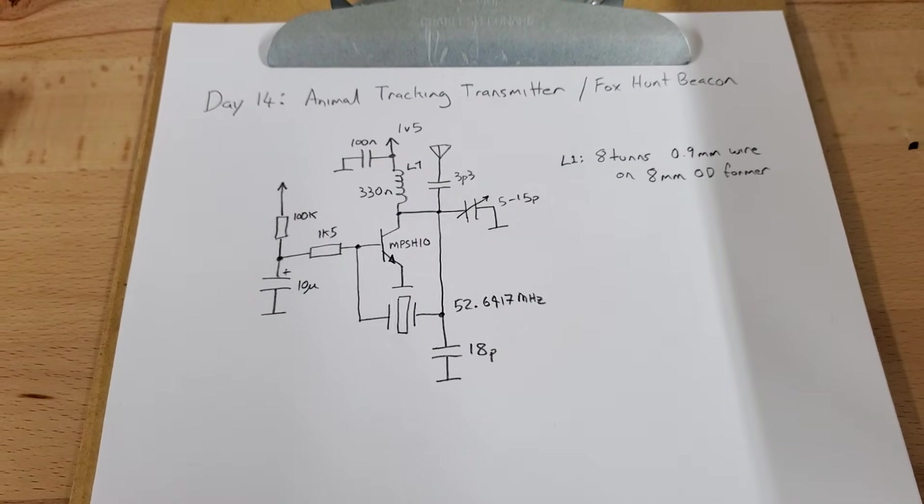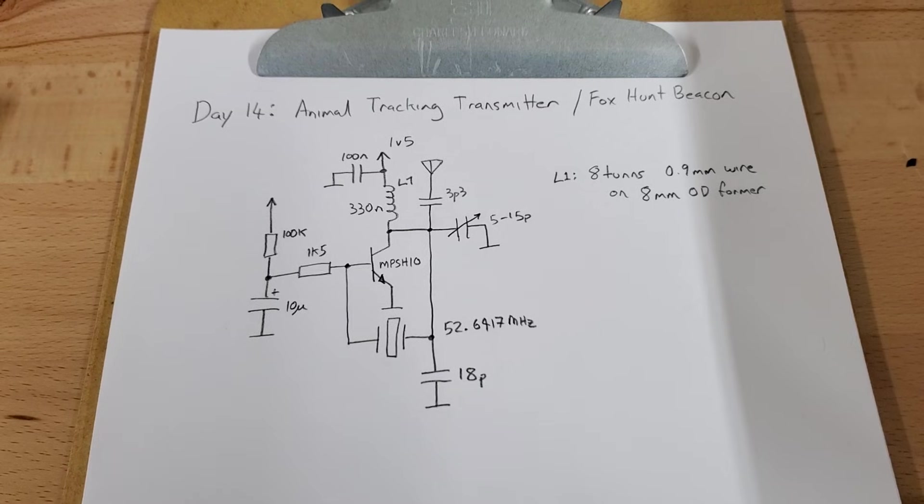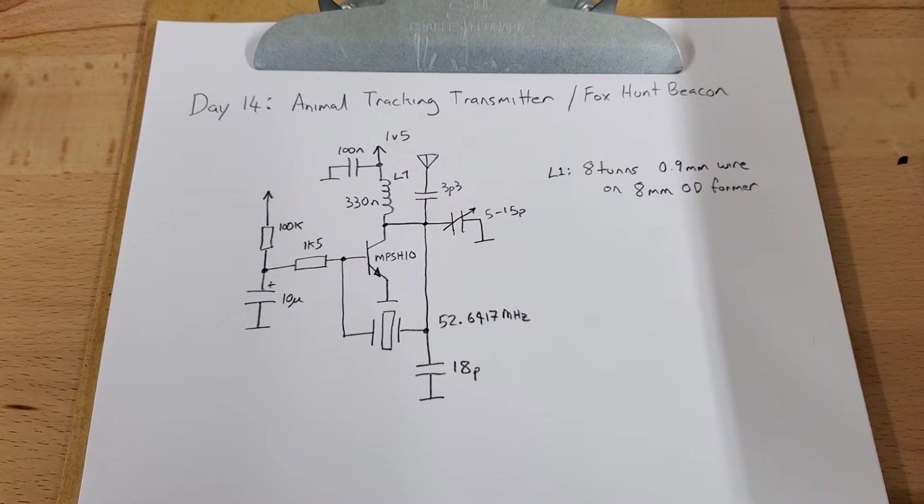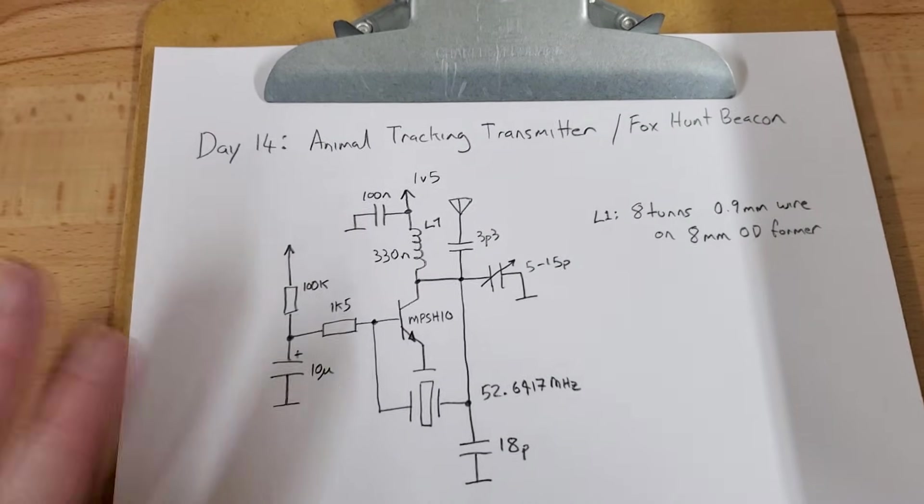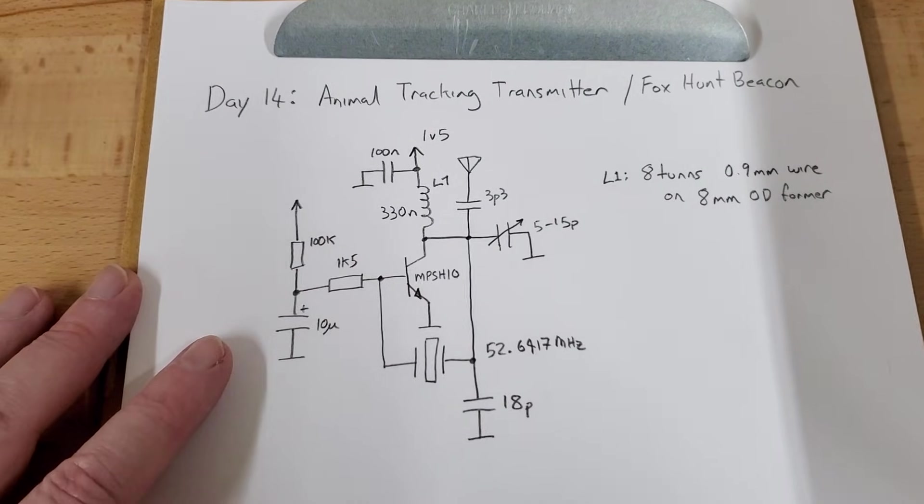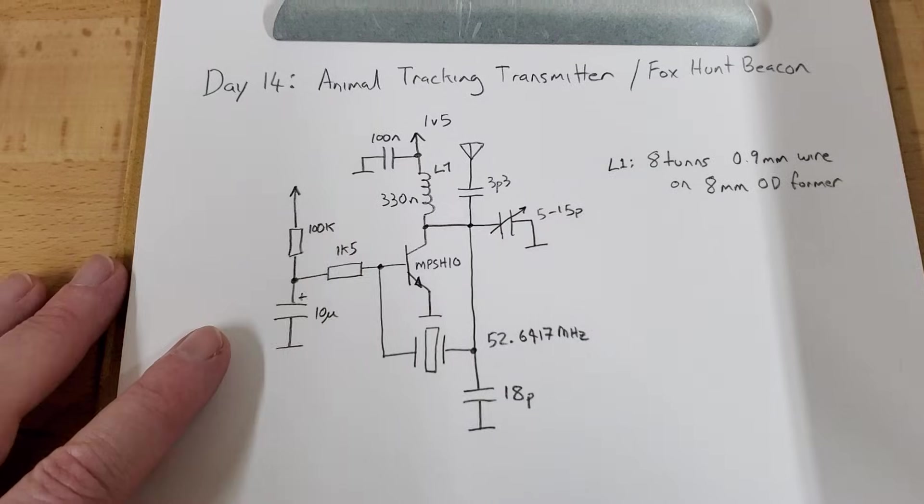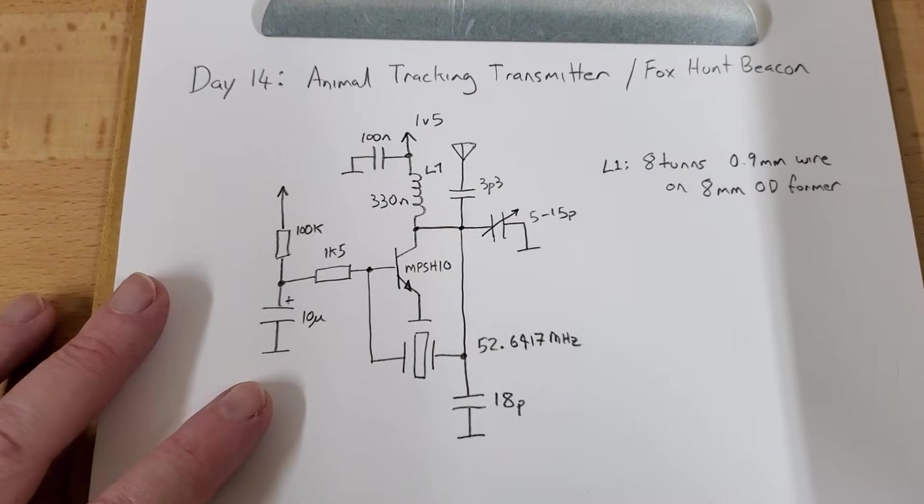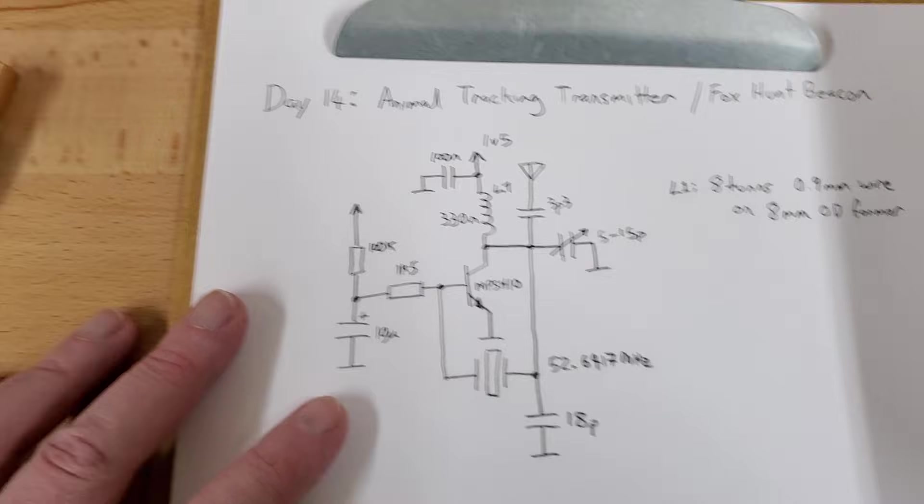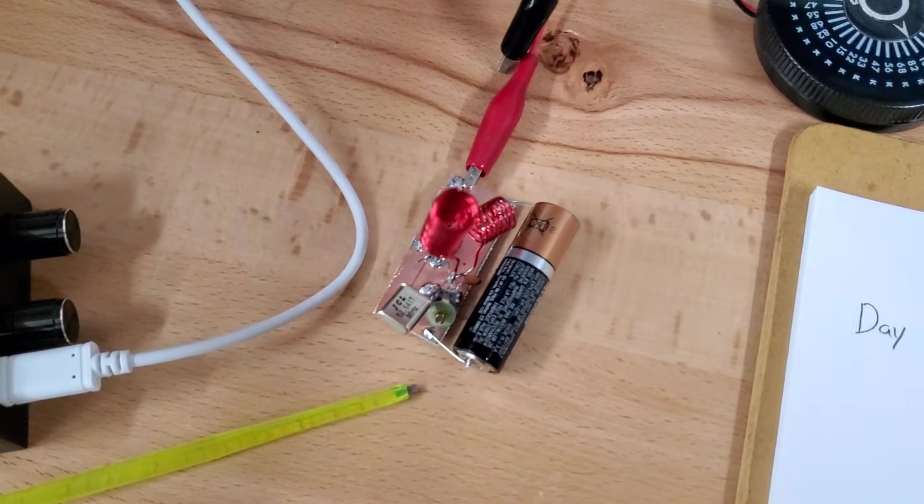G'day everyone. Day 14. Animal tracking transmitter or a fox hunt beacon. This is a really simple circuit that one might have used to track animals for scientific research. It can be built extremely small if you use surface mount devices, but I physically built this one fairly large just to make it easy.